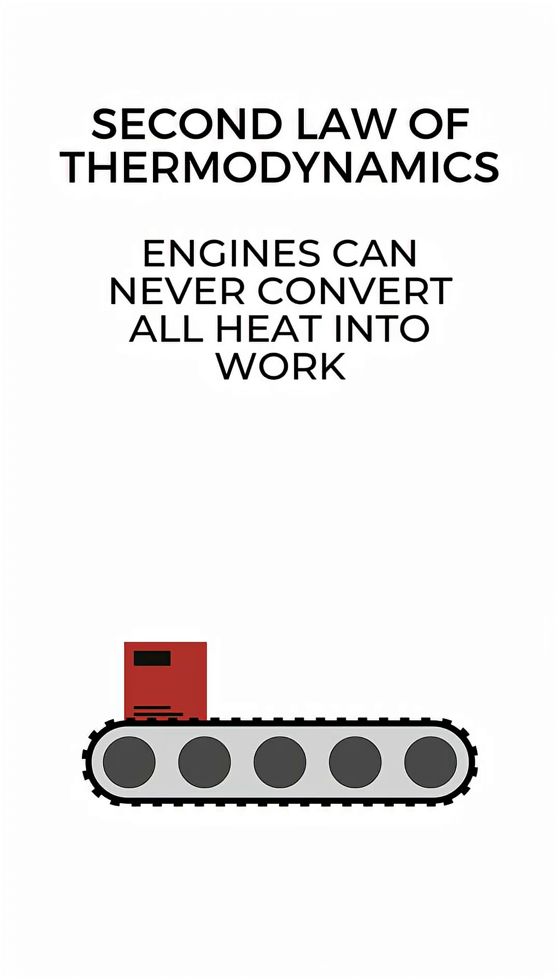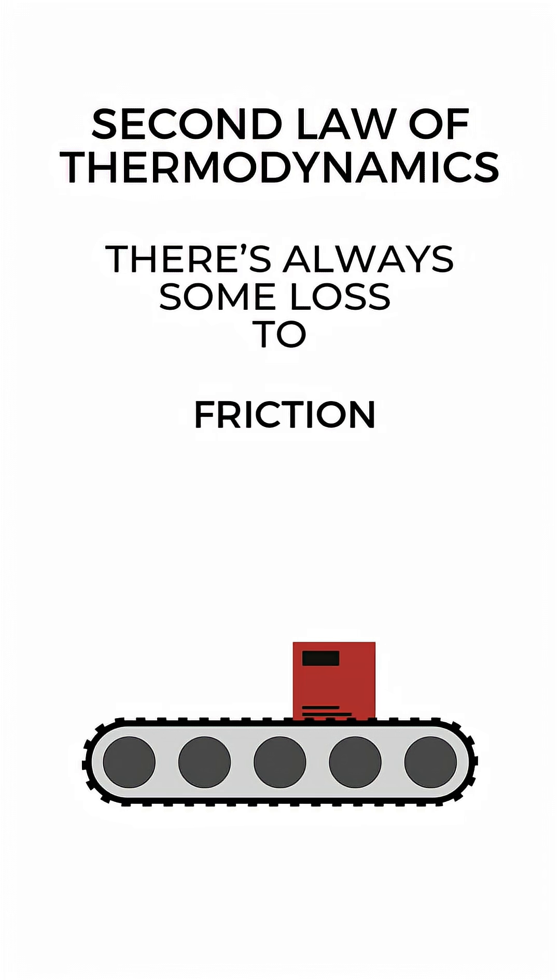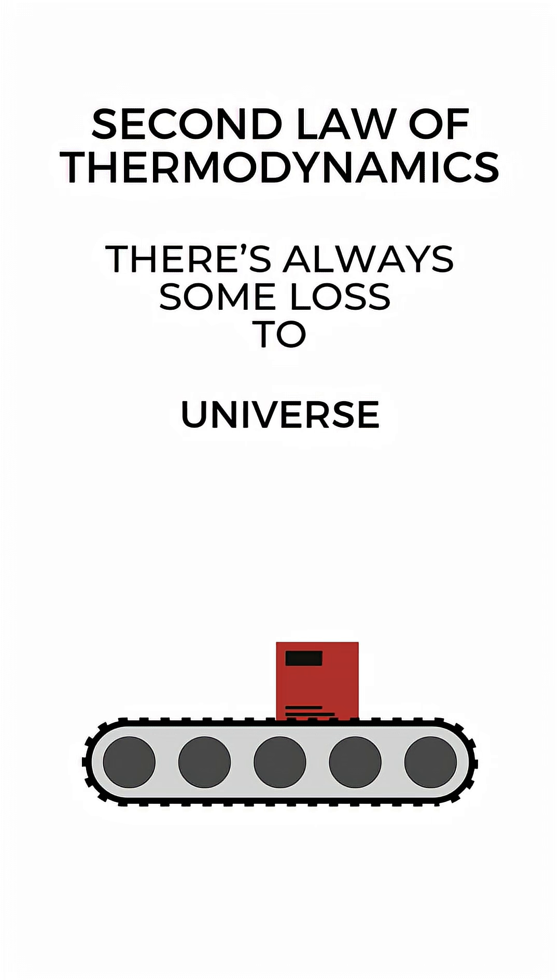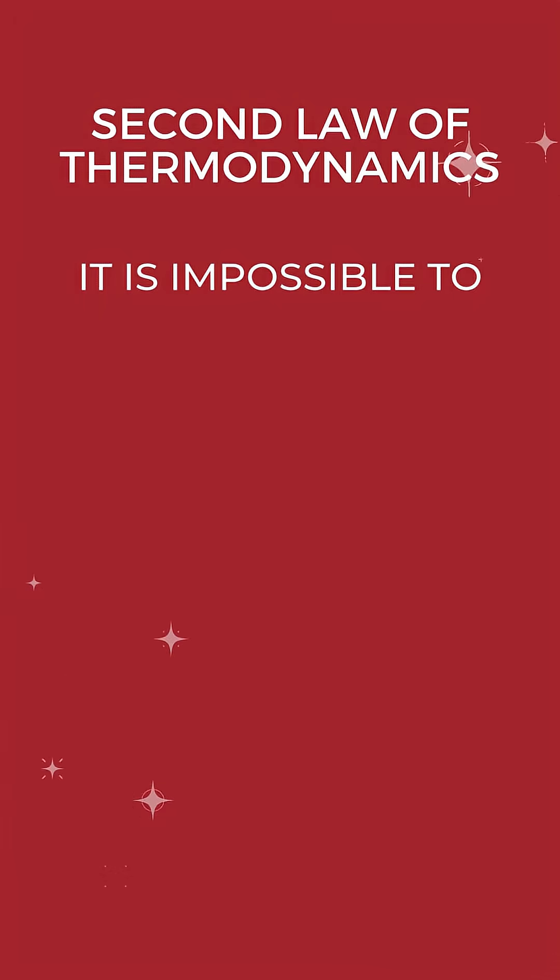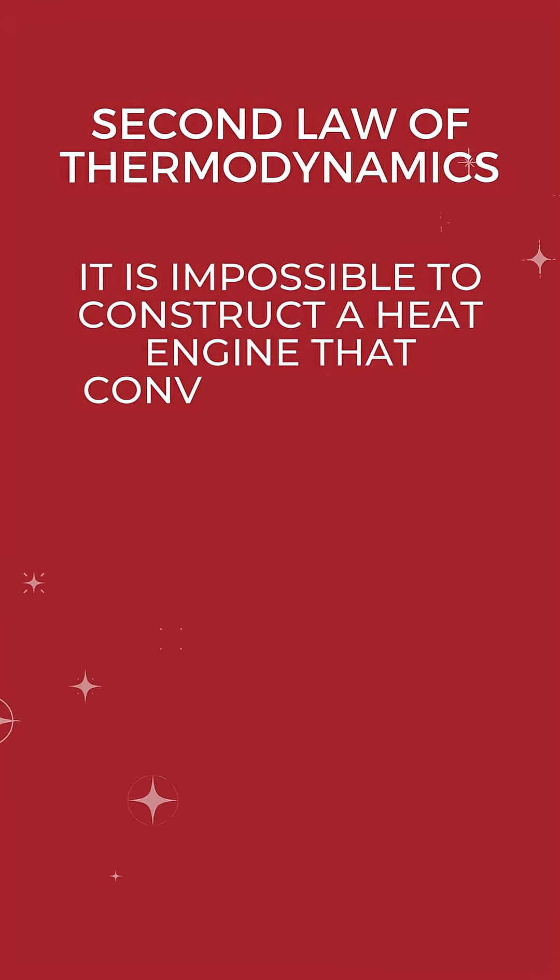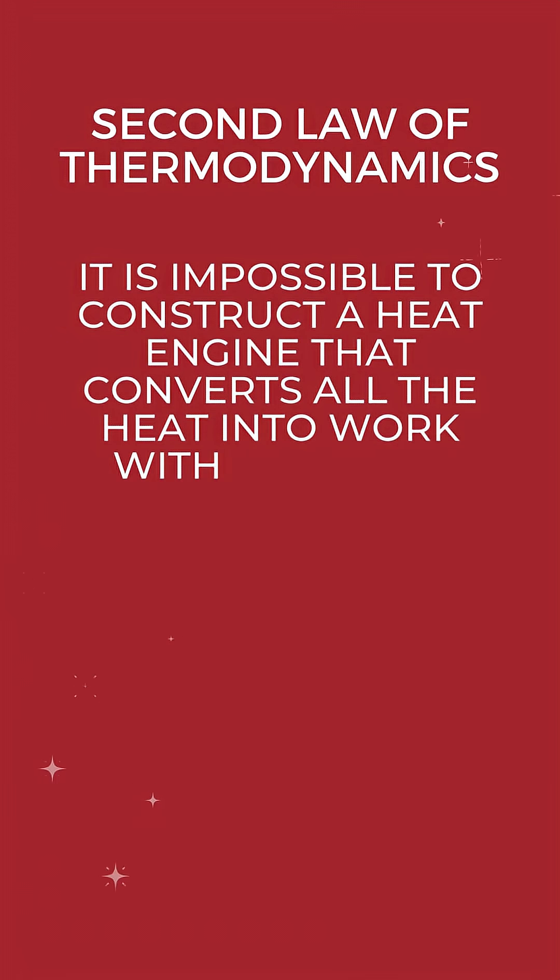Engines can never convert all heat into work. There's always some loss to friction, to noise, to the universe. This is why no machine is 100% efficient. It is impossible to construct a heat engine that converts all the heat into work with no other effect. That's the second law's message.